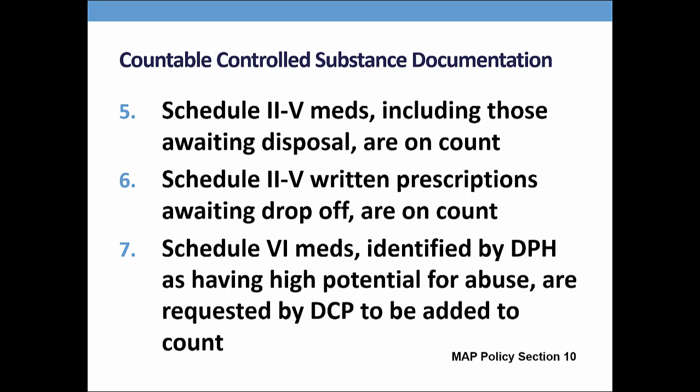Prescriptions for countable medications, if at the program, must be added to the count and counted. When the prescription is brought to the pharmacy to be filled, the prescription is subtracted from the count. When the medication is received from the pharmacy, the tablets are added into the count on a new count sheet page. If a Schedule 6 med is considered by the Department of Public Health to have a high potential for abuse, it may be requested that it be added to the count. Currently, Gabapentin and Fioracet should be added to the count.